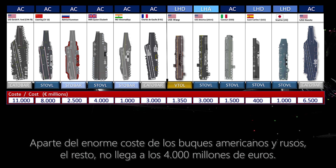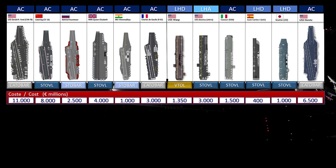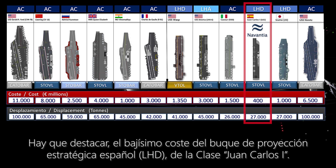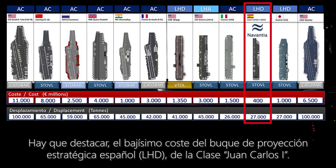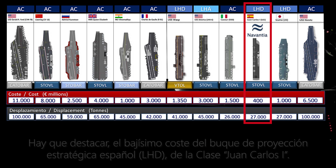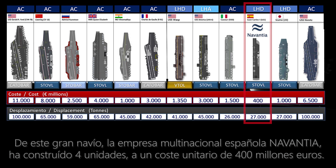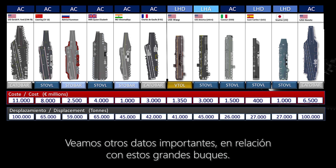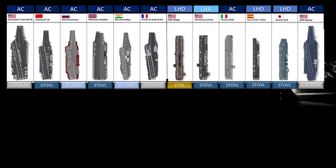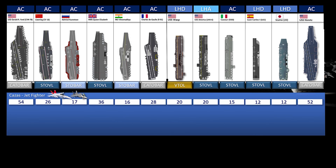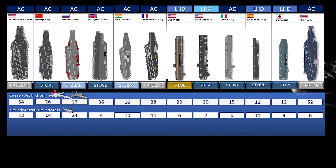Apart from the enormous cost of the American and Russian aircraft carriers, the rest does not reach 4,000 million euros. It should be noted the very low cost of the Spanish strategic projection vessel of the Juan Carlos First Class. Of this great ship, 4 units have been manufactured, with a unit cost of only 400 million euros. Let's look at other important data about such large ships.